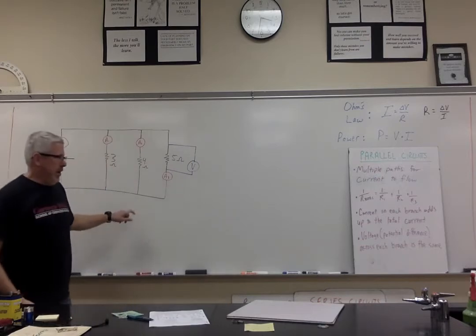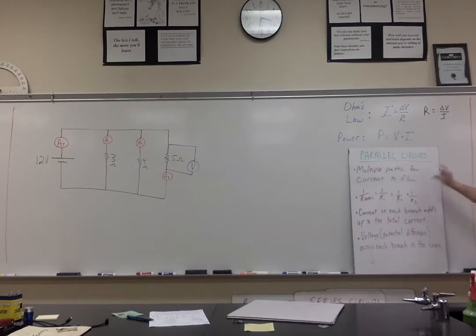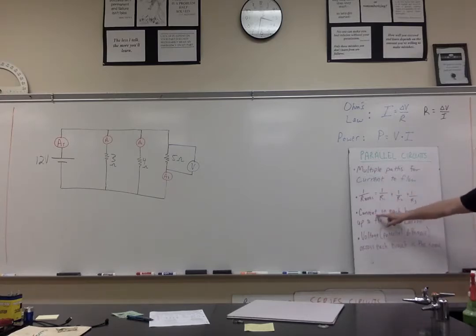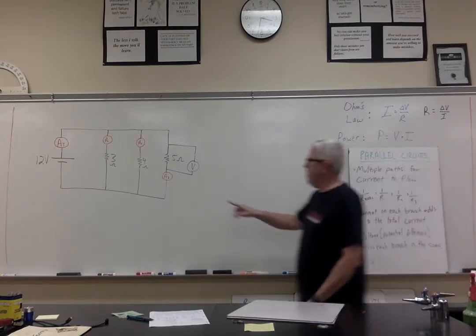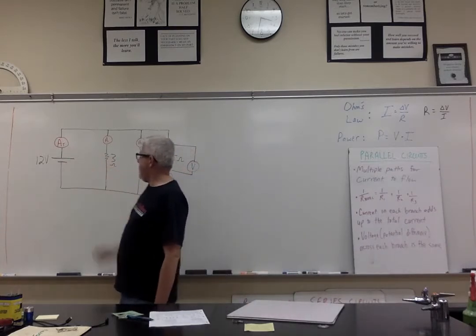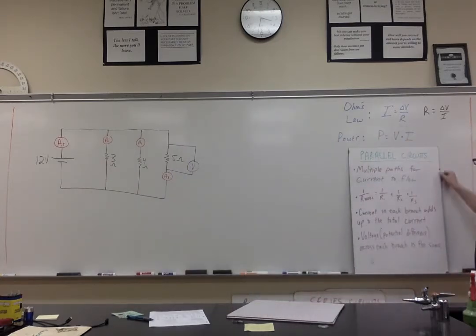So we're going to go back to this circuit now. Multiple paths for current to flow. This is how we determine the total resistance: by adding the reciprocals and then taking the reciprocal of that — which is mathematically something you want to practice. Current in each branch adds up to the total current — the current in this branch plus this branch plus this branch should add up to the total current provided by the power source. And finally, the voltage difference or potential difference across each branch is the same. That's why I've only included one voltmeter in the circuit.